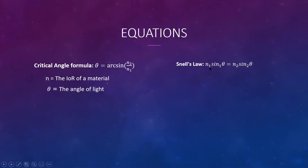Here are some equations we need to know: the critical angle formula, which is θ = arcsin(n₂/n₁), where n is the index of refraction of a material and θ is the angle of light. We also have Snell's Law, which we used before: n₁ sin θ₁ = n₂ sin θ₂.